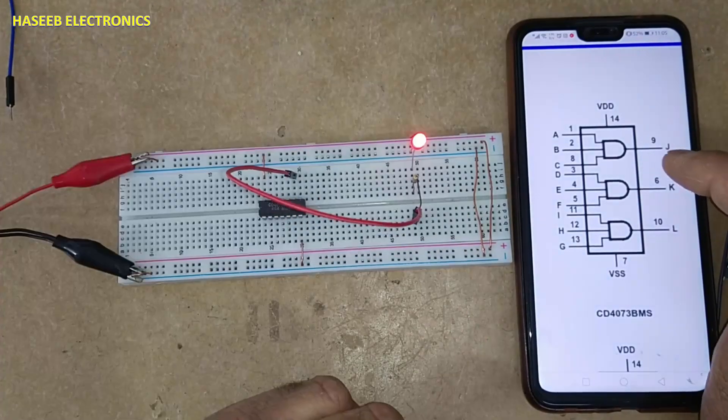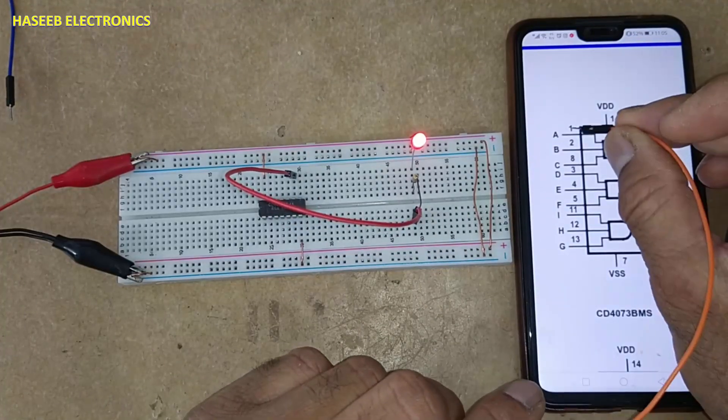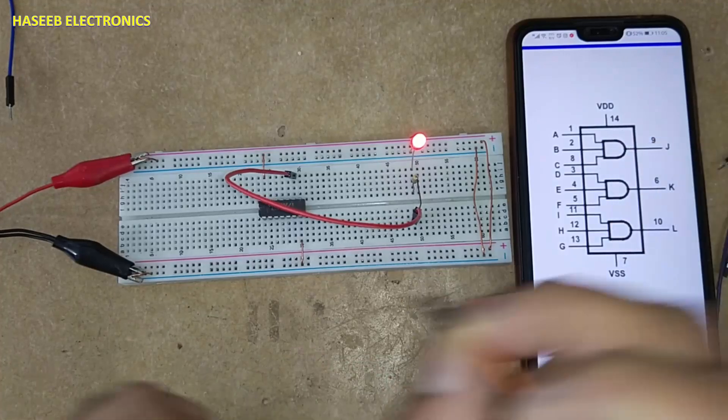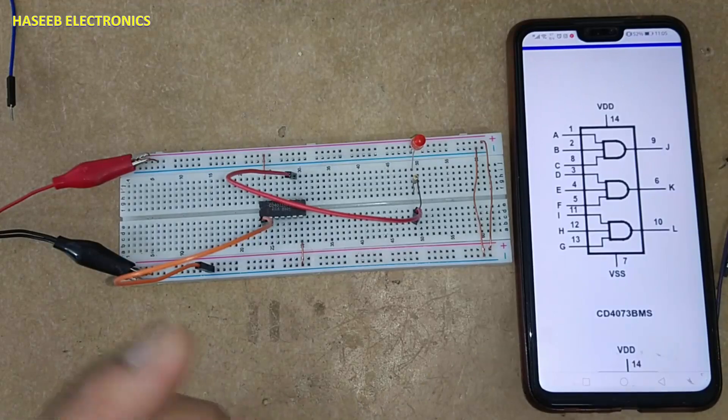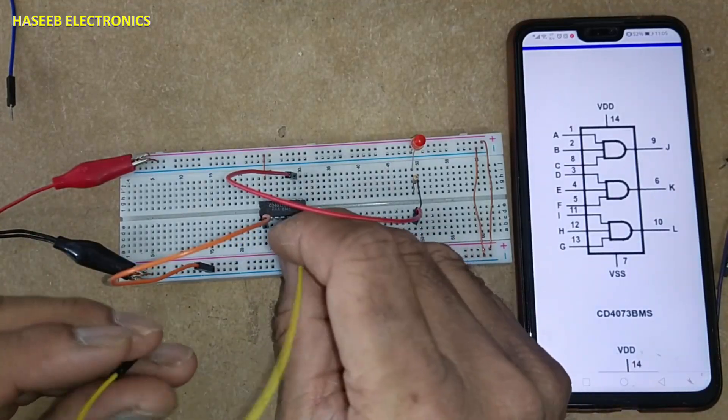The resistor's second end connects to pin 9, which is the output of the first gate. Pins 1, 2, and 8 are the inputs. I connected pin 1 to ground, pin 2 to ground, and pin 8 to ground.